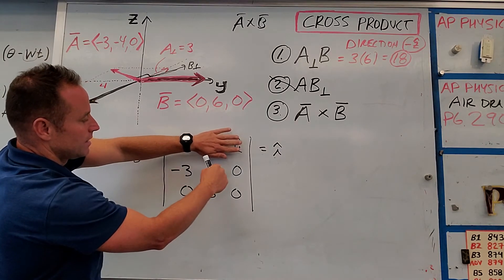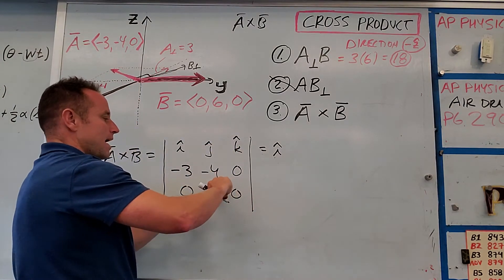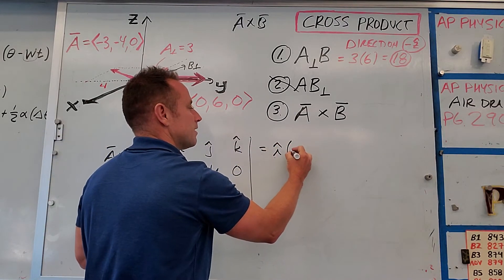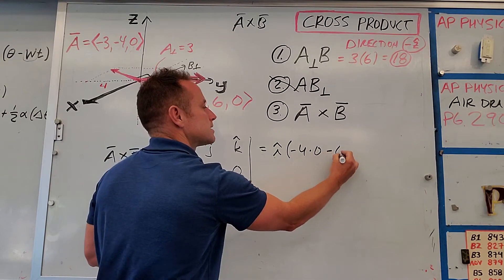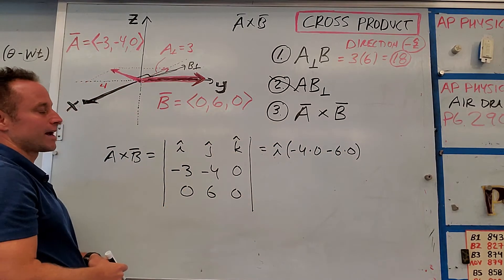So you'll have negative 4 times 0 minus 6 times 0. So that's going to be 0. So we get nothing in the I hat direction.